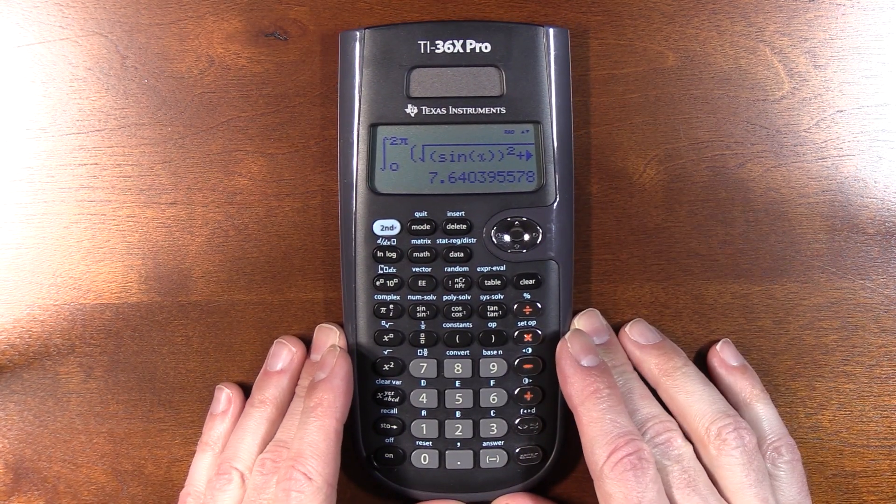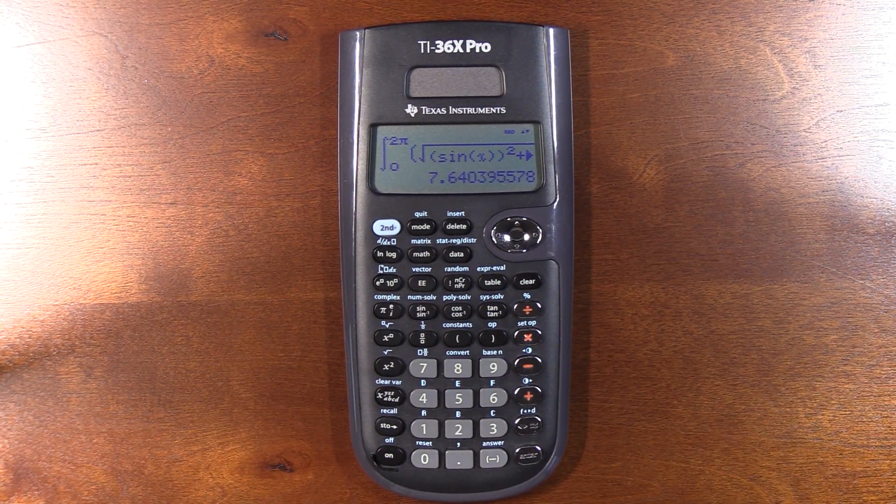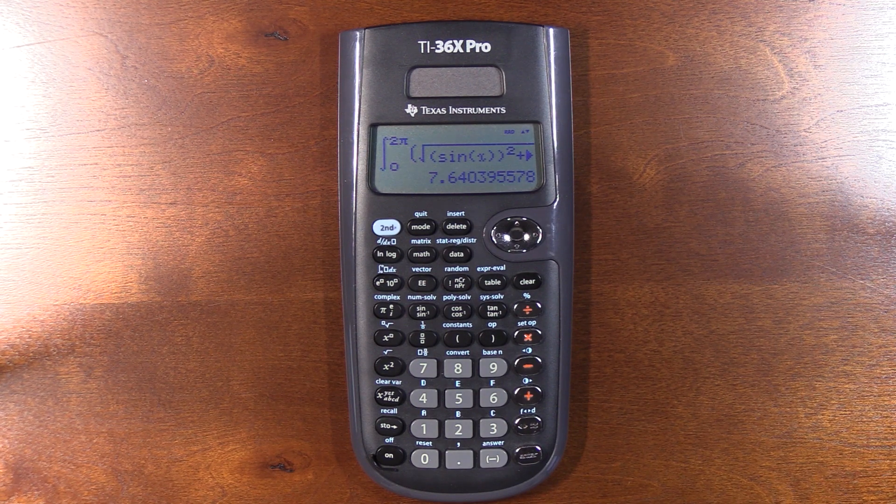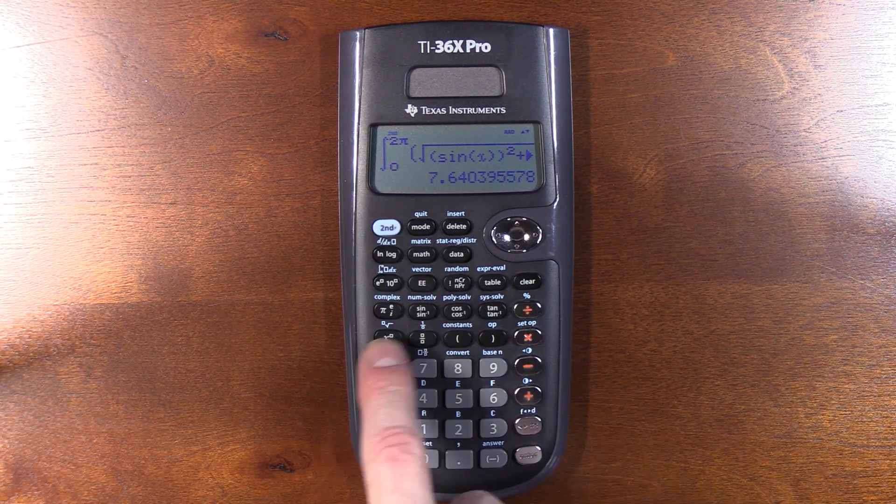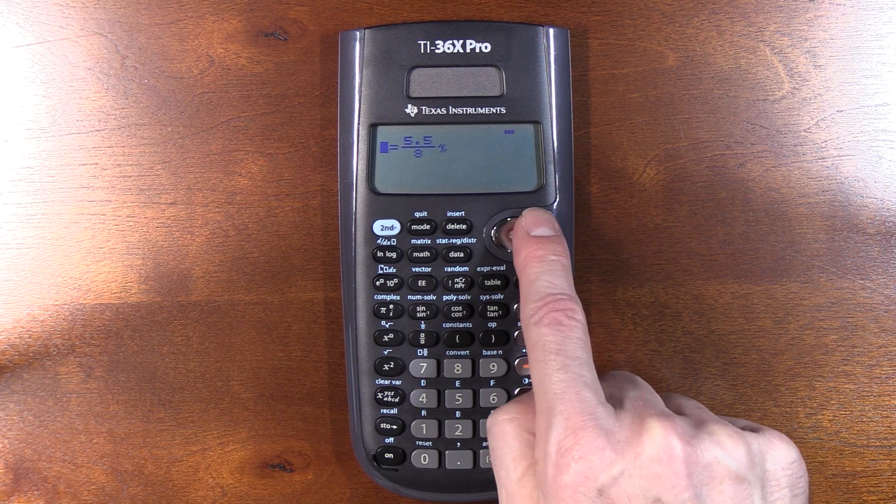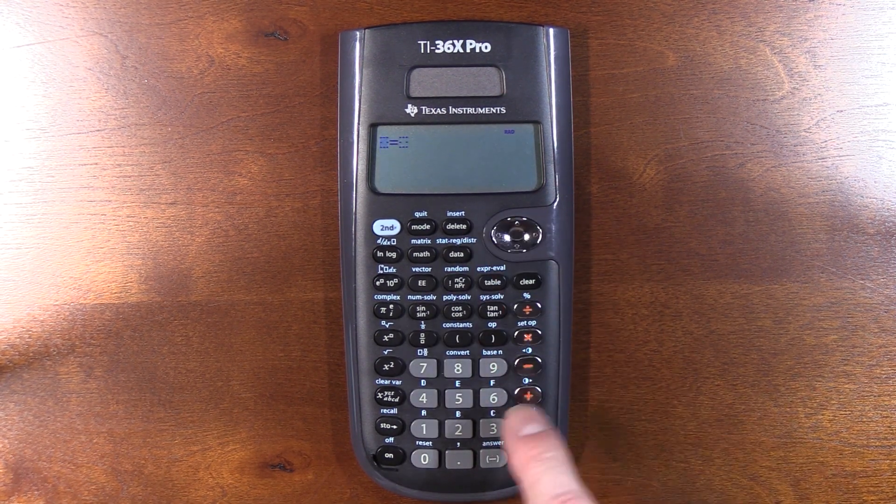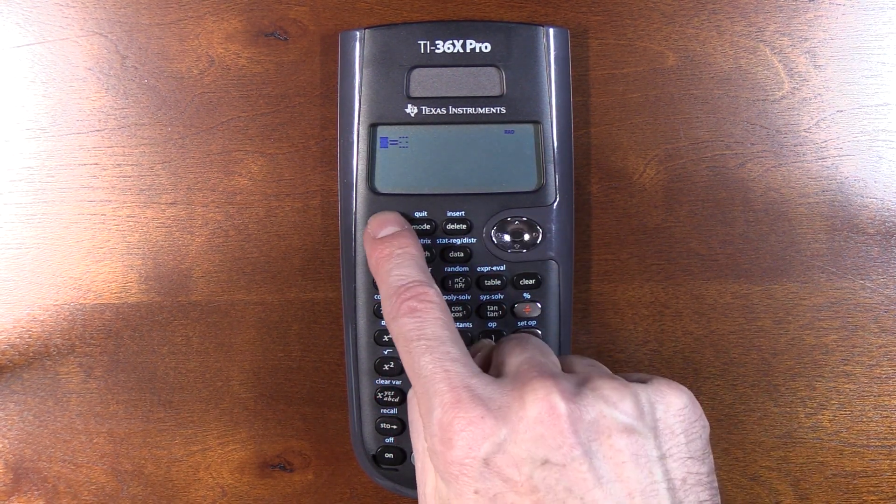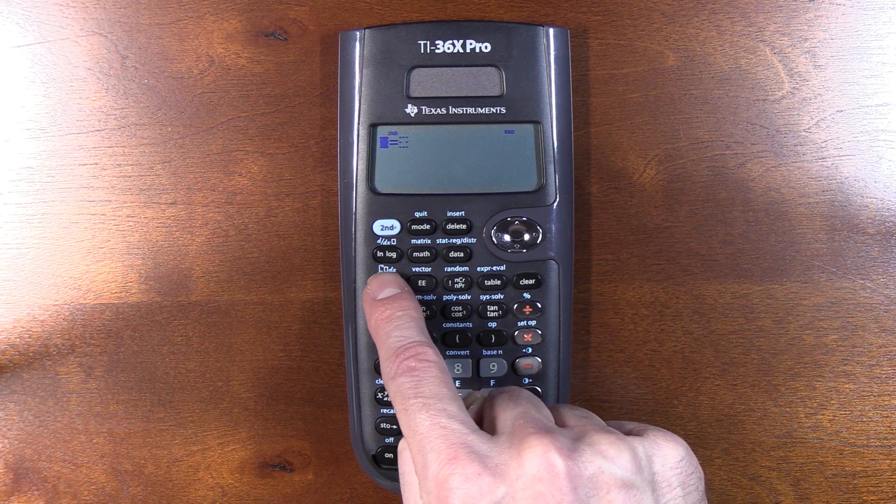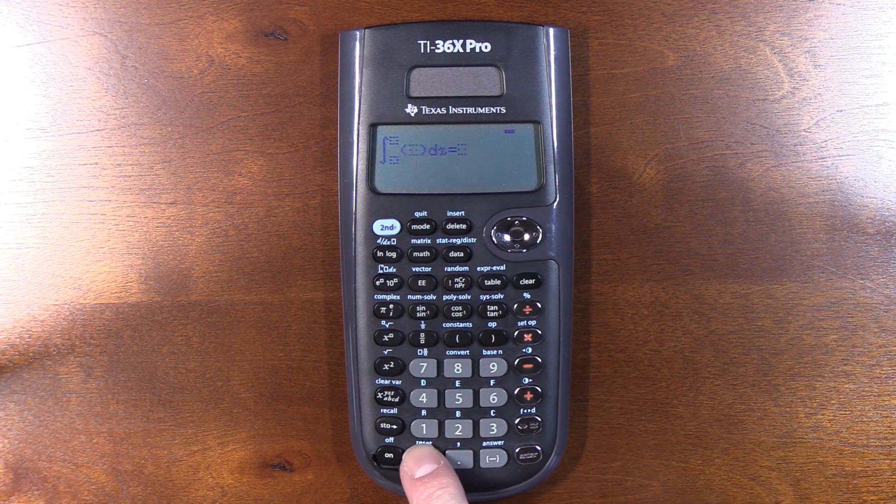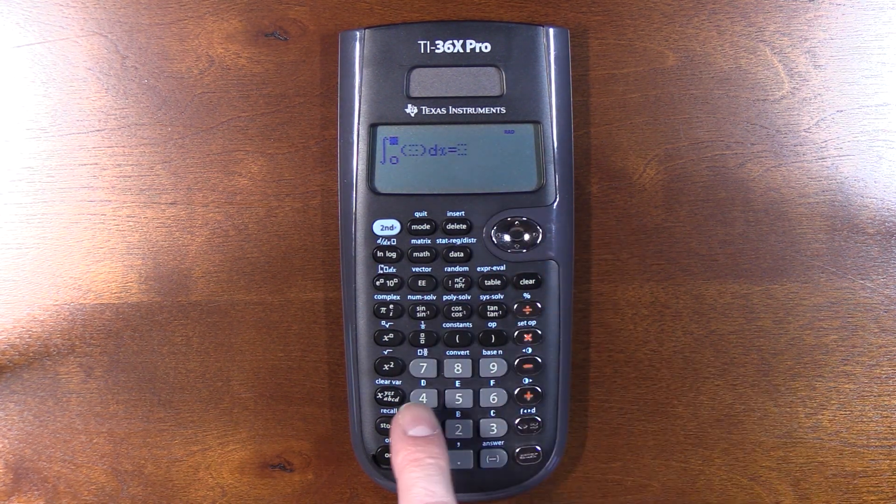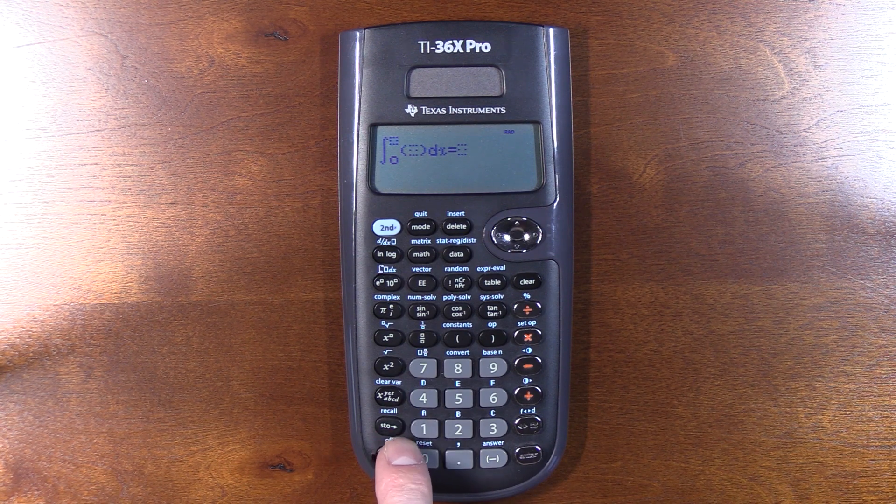Here's the answer we got when we gave the upper limit of 2π, but let's go into the number solver here. You have to clear this on both sides every time. And enter our integral. For my upper bound, I'm going to put an X.